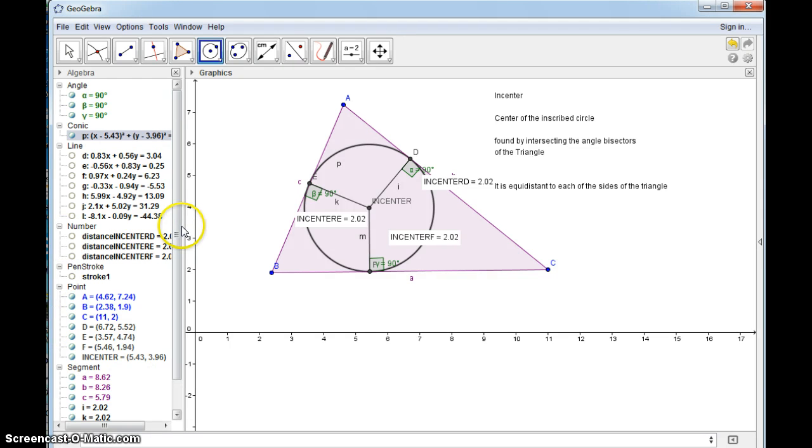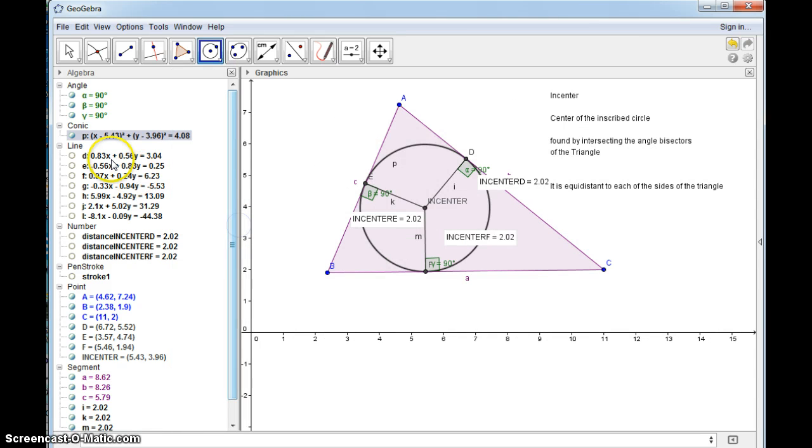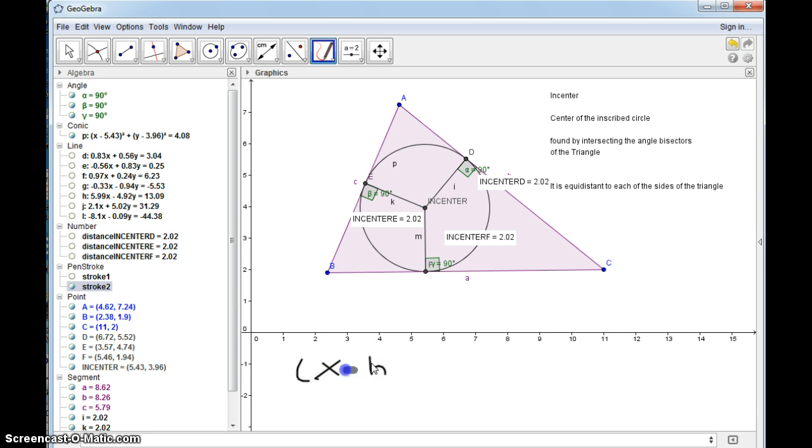Now let me look at the equation that we have. You can actually open this up a little to see it. The equation is in the form of (x - h)² + (y - k)², this equation of a circle, is equal to r².